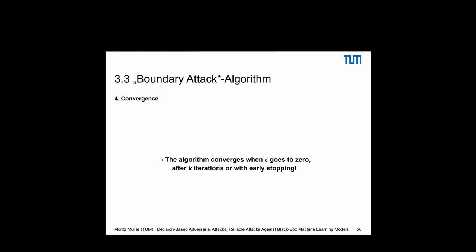When epsilon goes to zero, we can use this as a convergence criterion. We could also set a fixed number of K iterations, or use early stopping when the perturbation on the adversarial example becomes imperceptible to humans. Now let's look at how the boundary attack performs against other types of attacks.